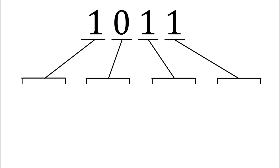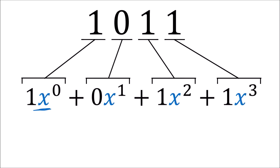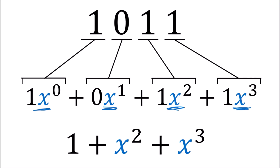For a more specific example, with the binary message 1, 0, 1, 1 — this gets x to the 0, this gets x to the 1, this gets x to the 2, and this gets x to the 3. So the polynomial for this message is 1 plus x squared plus x cubed.